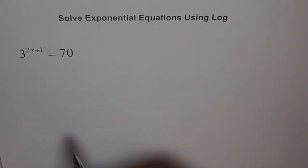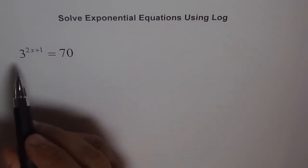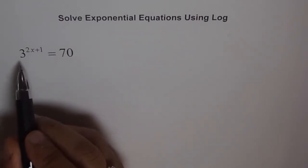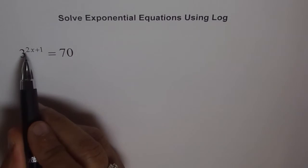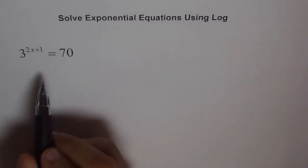Let's try to do it using approximation. In approximation, what we will try to do is estimate what value of 3 to the power of something can give us close to 70.